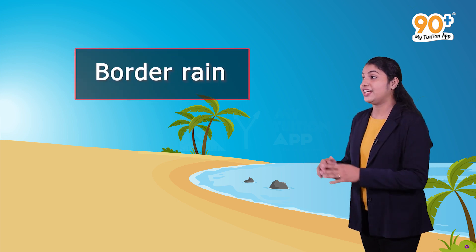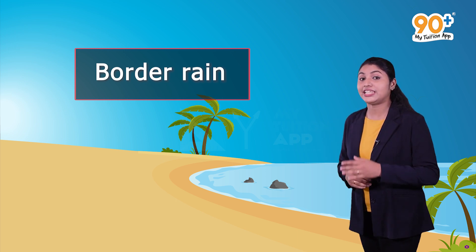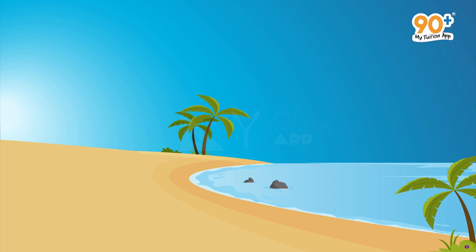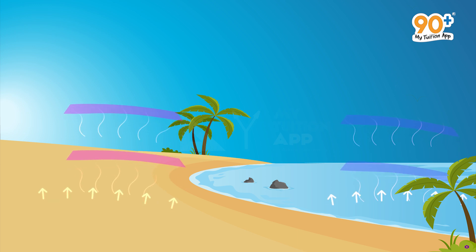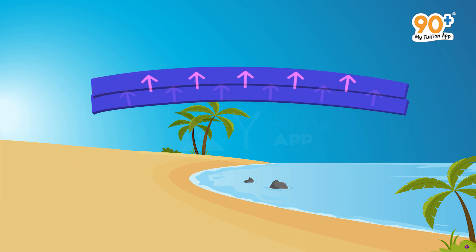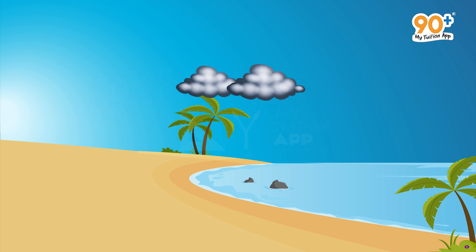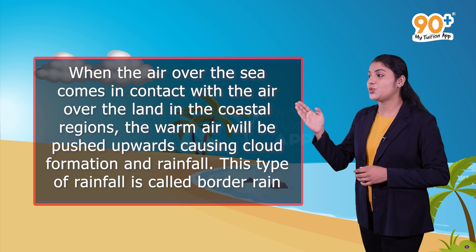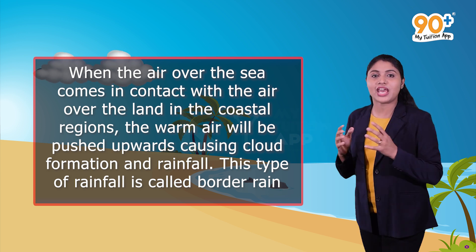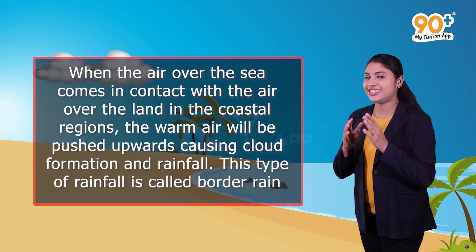Now let's move on to the next type — border rain, or tiradesavrishti. We have already studied that there is always a difference in atmospheric temperature over the land and the sea. When the air over the sea comes in contact with the air over the land in coastal regions, the warm air is pushed upwards, causing cloud formation and rainfall. This type of rainfall is called border rain, or teeradeya shavarishti.